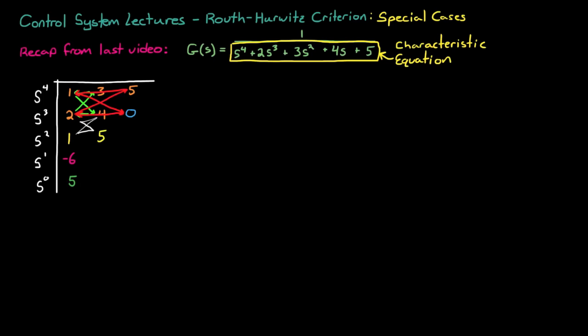And once the entire table is filled out, you can count the number of roots in the right half plane by counting the number of times the sign changes in the first column of the table. In this case there are two roots in the right half plane because the sign changes once between 1 and minus 6, and a second time between minus 6 and 5. Therefore this system is unstable.